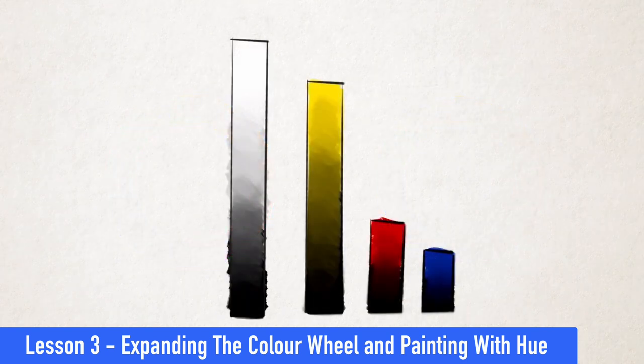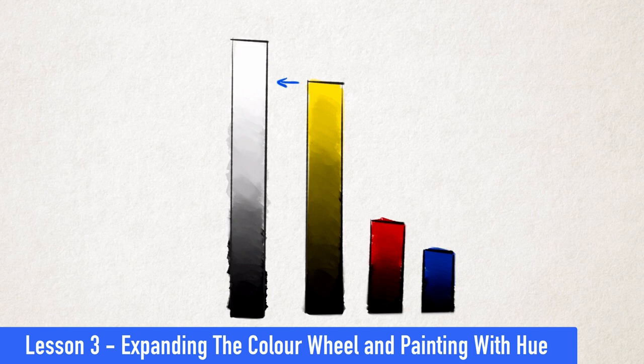Because yellow starts a lot higher on the value scale, it's going to be affected by the addition of black to a much greater degree than what either blue or red will. If we start adding black into our red or our blue, we're not going to feel as if there's much of a color change that's going to happen.